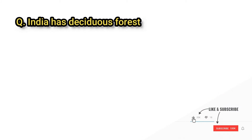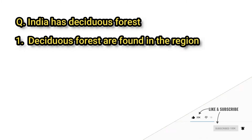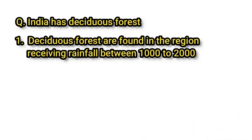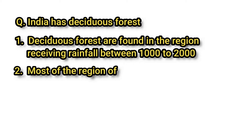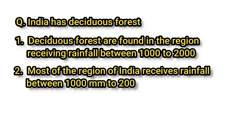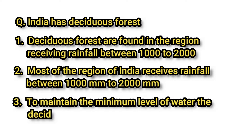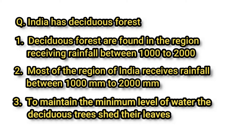Most of India has deciduous forests. Deciduous forests are found in regions receiving rainfall between 1000 and 2000 mm, and most of India receives rainfall in this range. The peculiarity of this forest is that the trees mainly shed their leaves in the dry season to retain water.